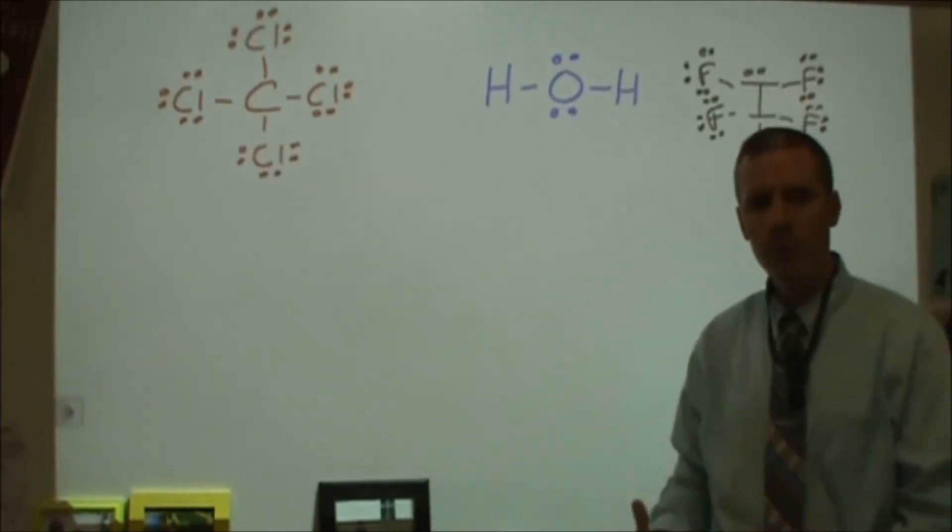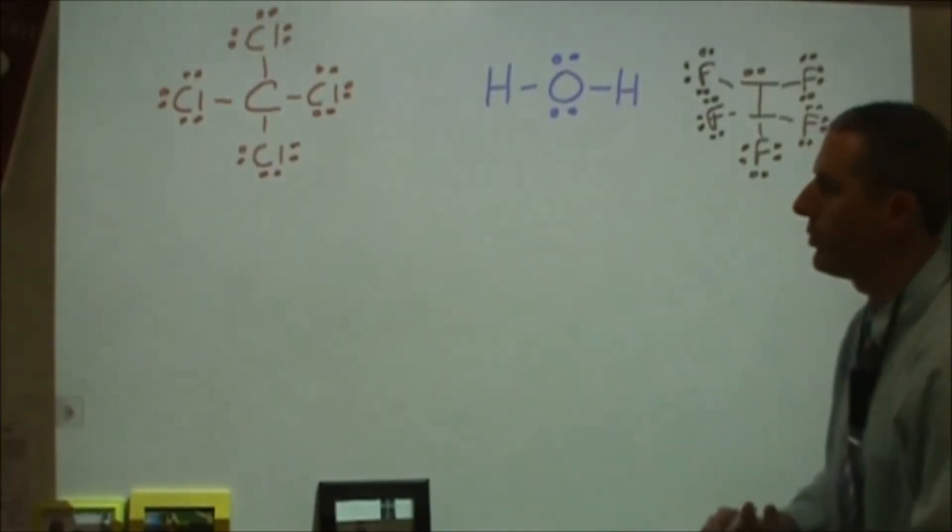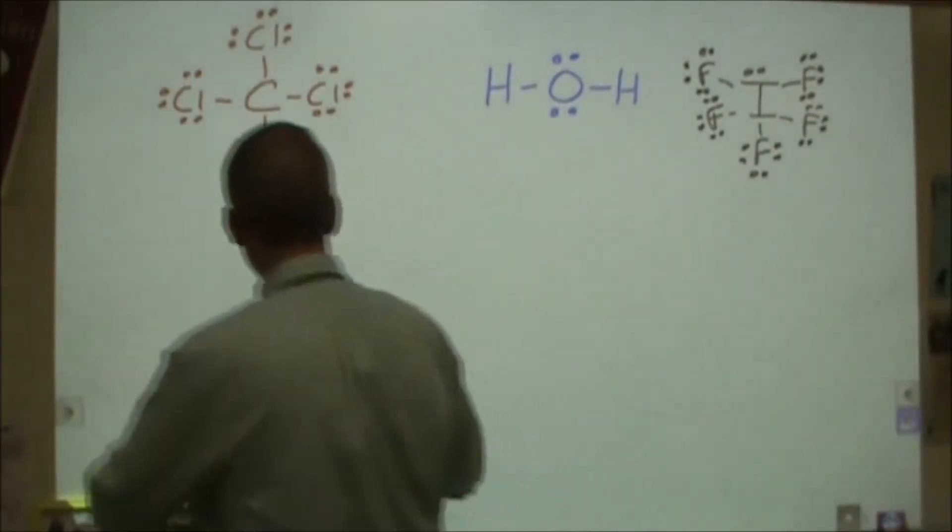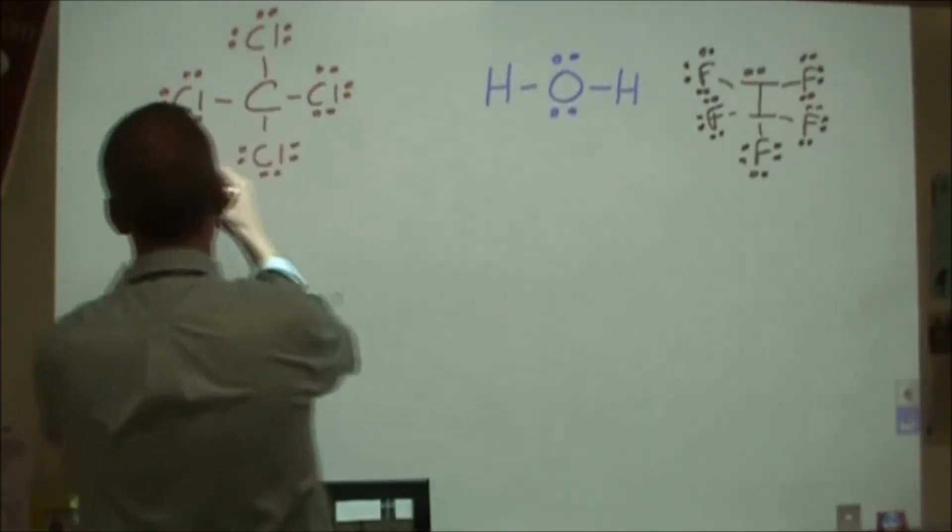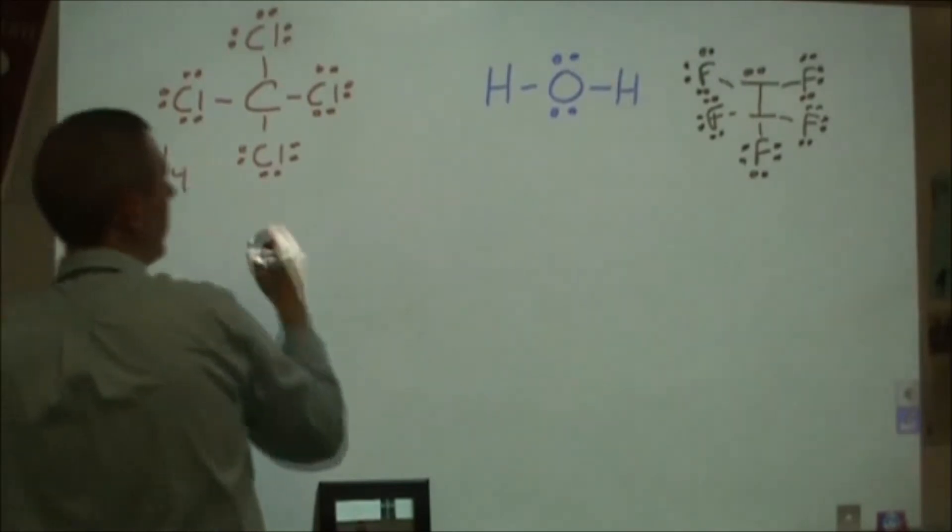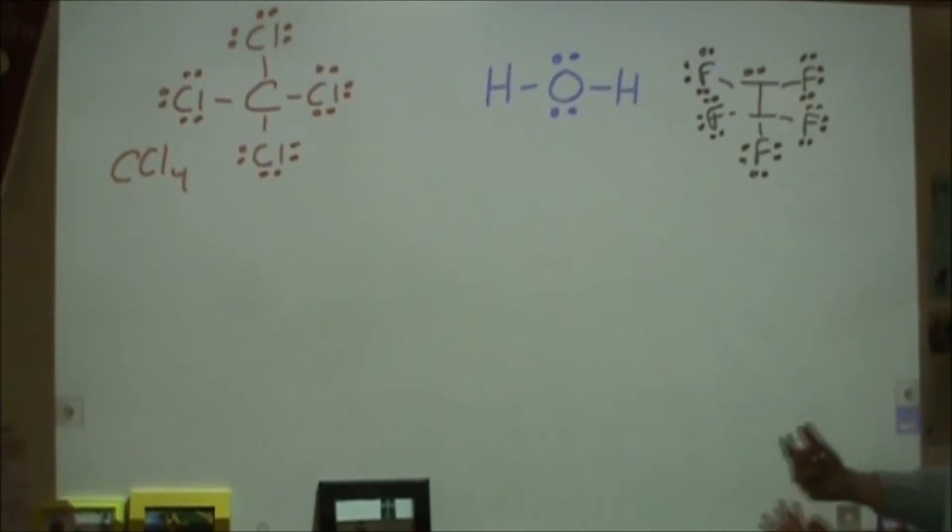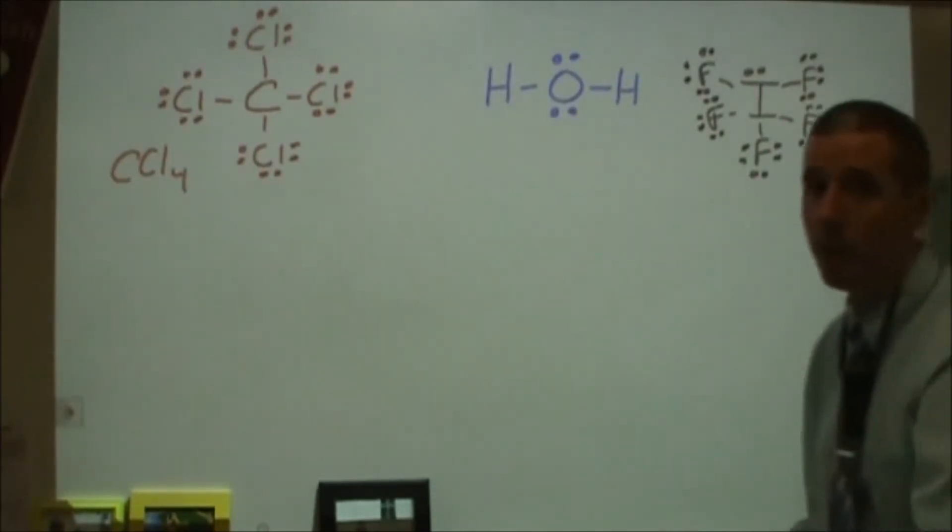Here I'm going to go through, once you've drawn a Lewis structure, what information you can derive from that Lewis structure. I've got three Lewis structures: carbon tetrachloride (CCl4), H2O water, and iodine pentafluoride. I'm going to go through and look at what things can I tell just by looking at the Lewis structure.